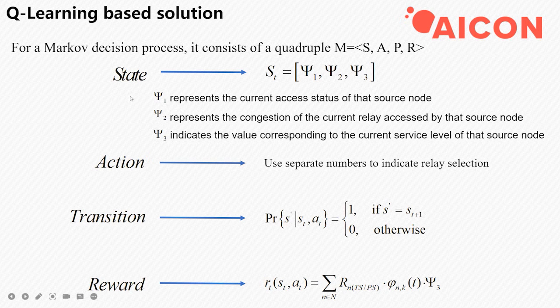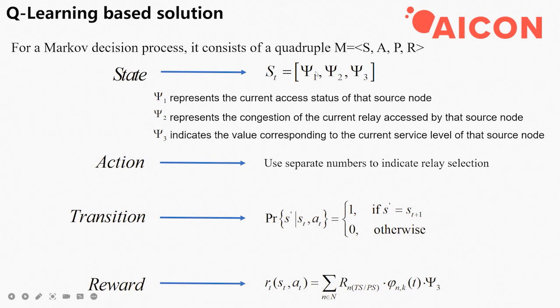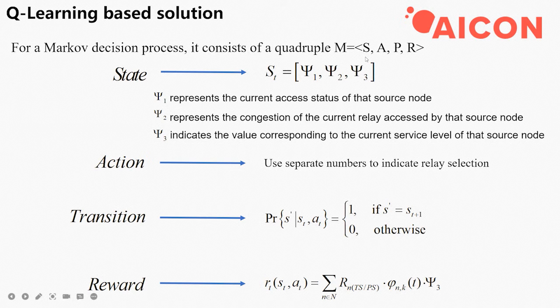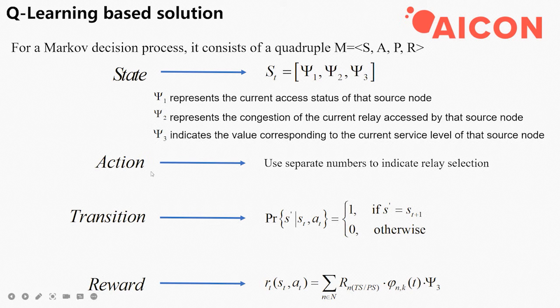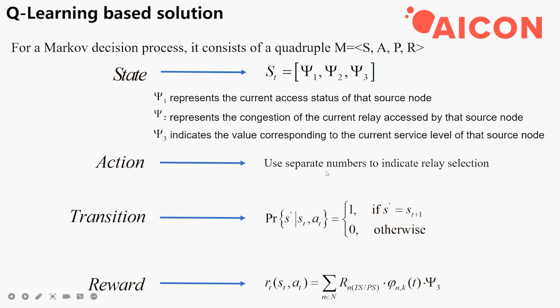For this, we use three parameters to indicate the connection, congestion, and task level. We use separate numbers to indicate the relay selection.